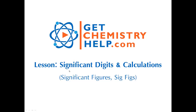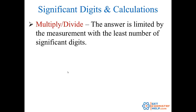Specifically, we're going to discuss how to determine how many significant digits an answer should have in a calculation. It's going to depend on what kind of calculation you're doing, because the rules for multiplying and dividing are different from the rules for addition and subtraction.